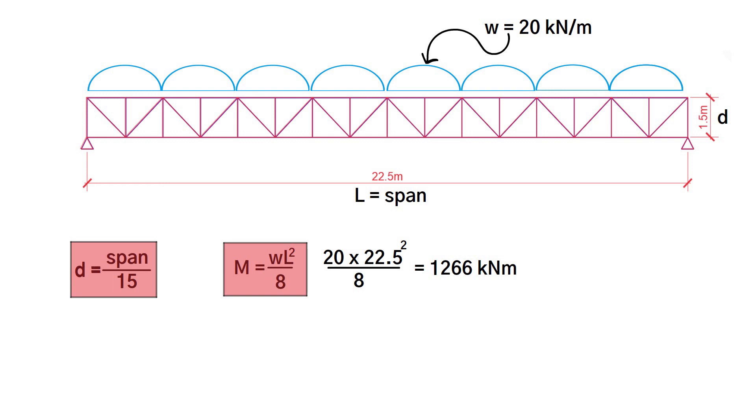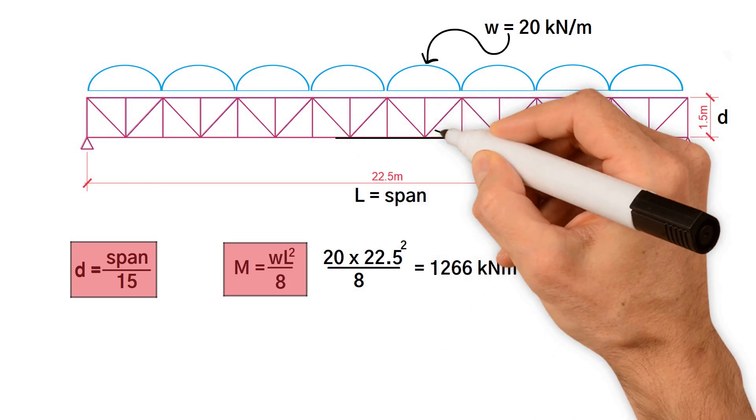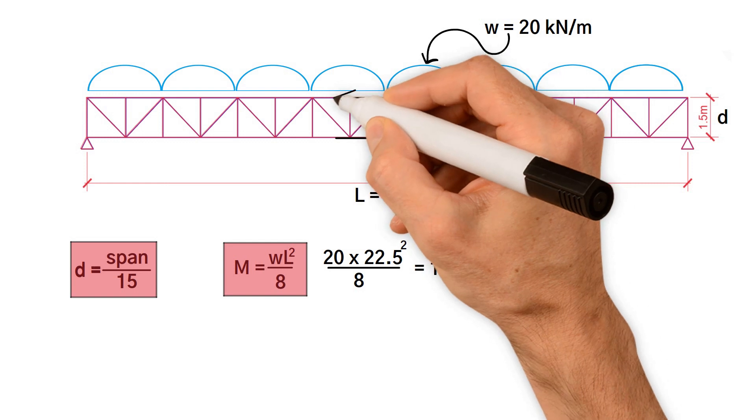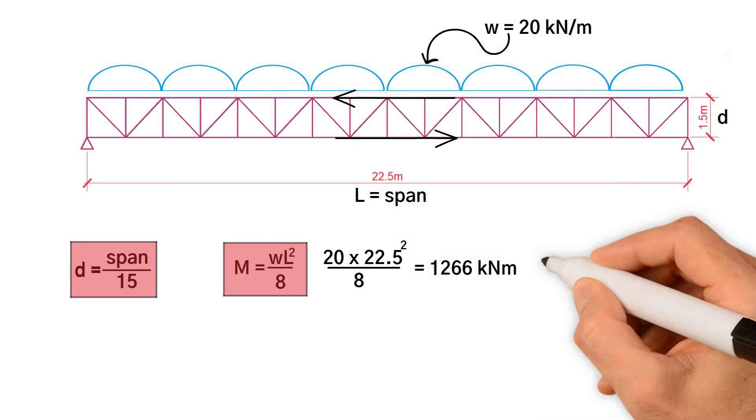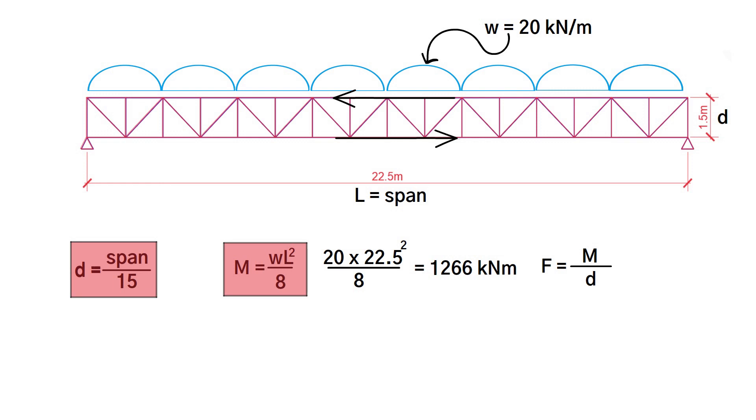The following formula you need is to find the axial load on the bottom and top chord. To find the force, we take our moment and divide by the depth between the two chords, 1.5 meters. The force equals M over d.